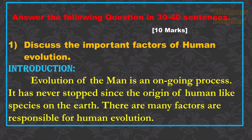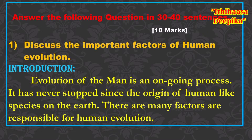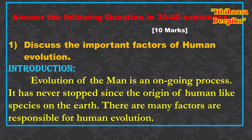Here I stop my explanations on 5-mark questions. The next part covers 10-mark questions. Answer the following question in 30 to 40 sentences. There is one question: discuss the important factors of human evolution. A total of 8 factors are explained in the textbook. For 10-mark questions, you must compulsorily write an introduction and conclusion.